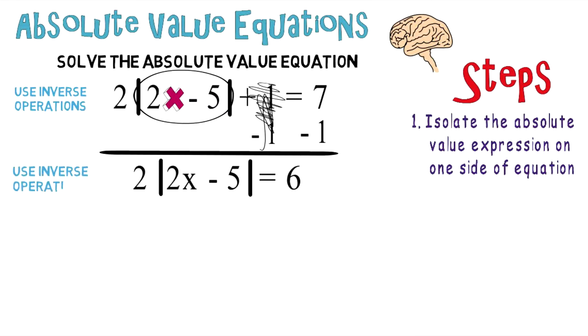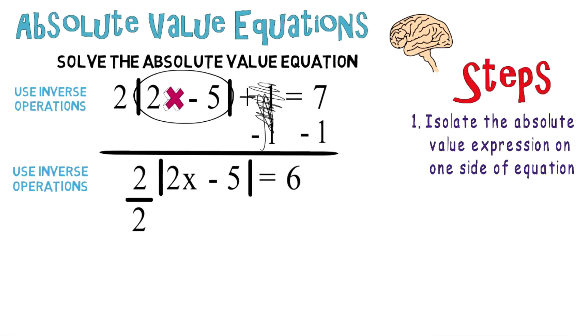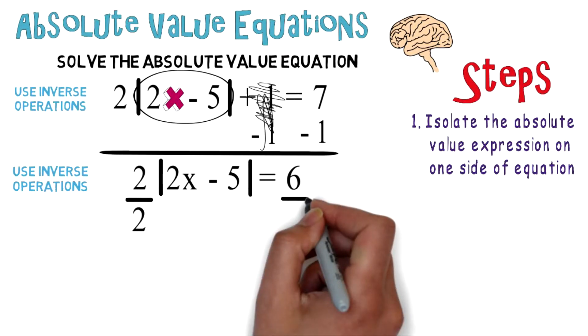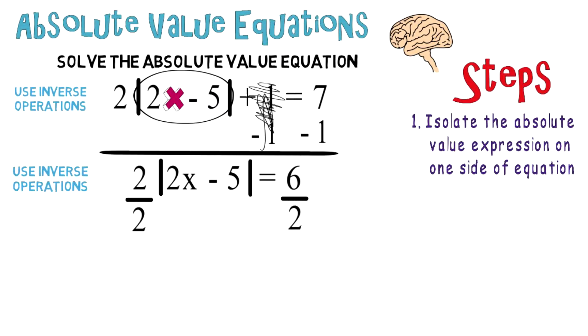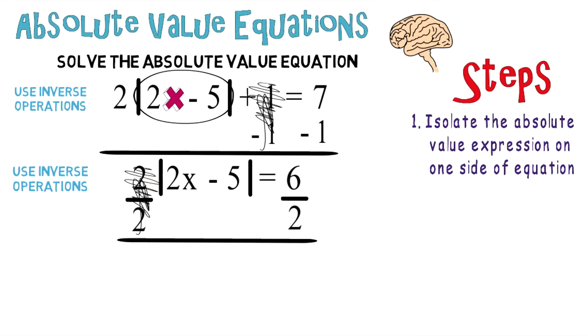And again, we want to use inverse operations. So let's divide both sides by two. Two and two cancel each other out. And then you're left with the following: |2x - 5| = 3.